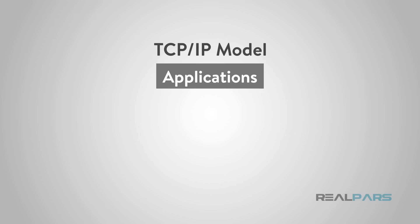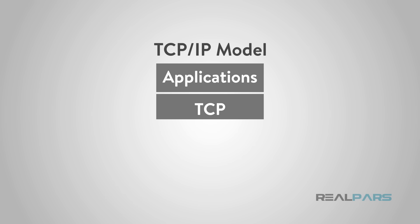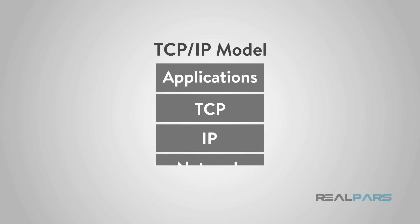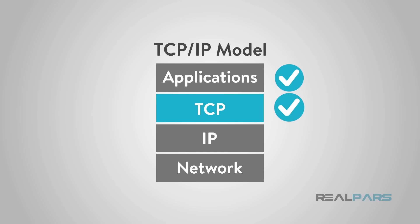The TCP/IP is a layered protocol. Those layers are Applications, TCP, IP, and Network. Basic functions are explained but there are many, many details in each layer. Each layer has a function that it performs and when complete is then passed to the next layer.